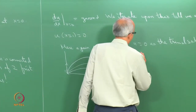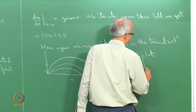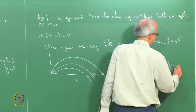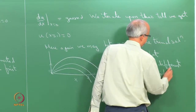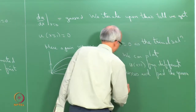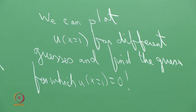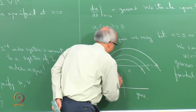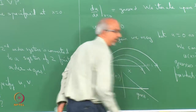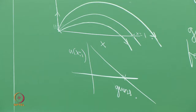We can plot u at x = 1 for different guess values and find the guess for which u(1) = 0. For a higher-dimensional problem, a more systematic method is required.